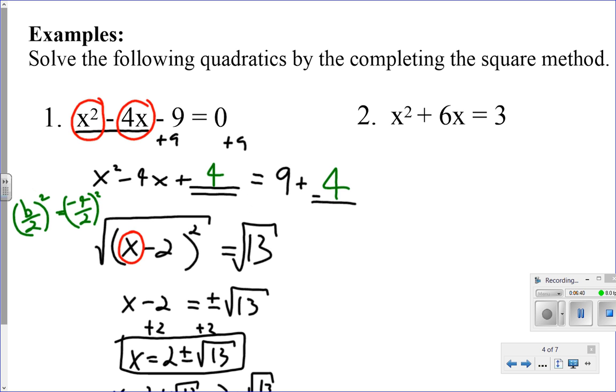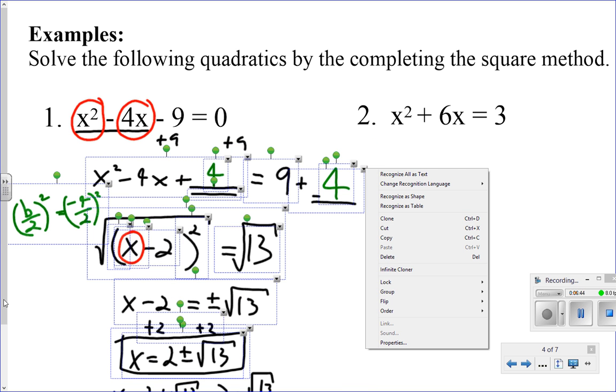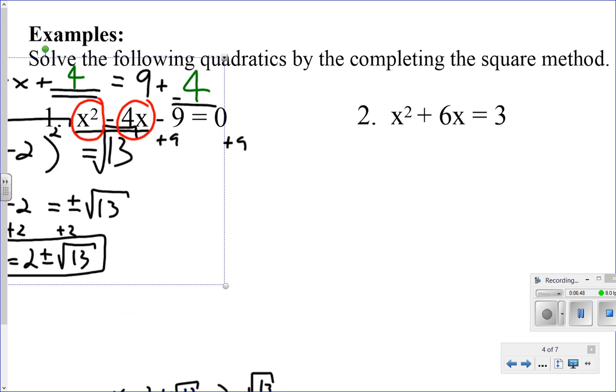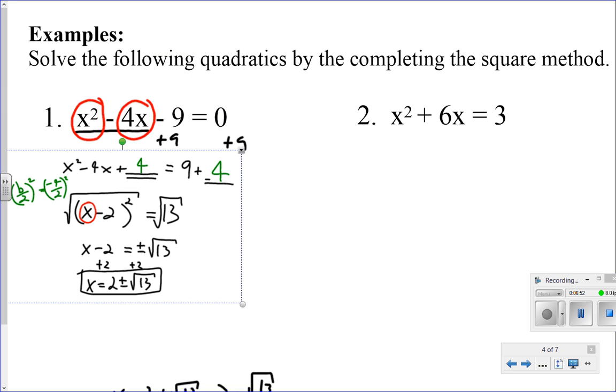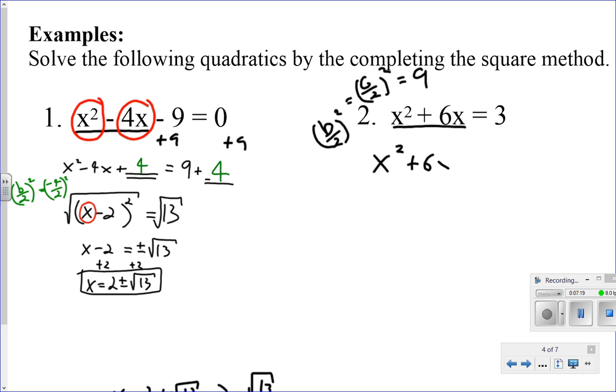All right. So my next problem, what's nice is I already have my x squared and my 6x on one side and that constant over on the right. So first thing I do is a little scratch work off to the side. B divided by 2 and square it. So for this one, it's 6 divided by 2 squared is 9. So I'm going to do x squared plus 6x plus 9 equals 3 plus 9. Remembering, I can't just introduce this 9 without compensating it on the other side of the equation as well.